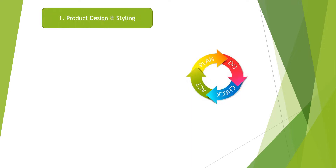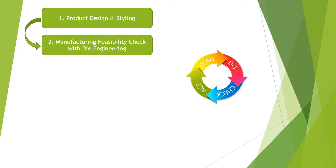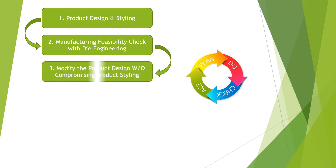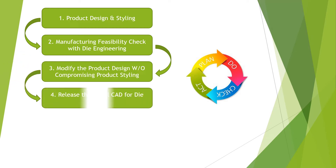The first phase is planning, which is nothing but product design and styling. Once the product design and styling at the concept level is done, it comes to the next stage of manufacturing feasibility check with the die engineering team. The team studies at a high level and gives inputs for redesigning without compromising on product styling, because every product's styling has a unique feature that impresses the customer. Once that is done, we get the initial CAD.